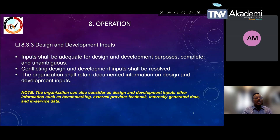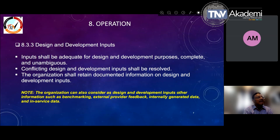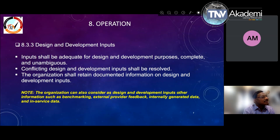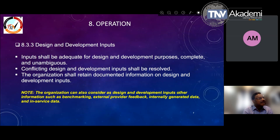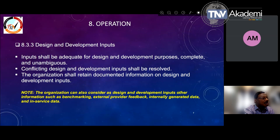Let us start with 8.3.3, which is a continuation on design and development input. Prior to design and development planning, the organization must ensure that inputs are adequate — complete in all respects, unambiguous, non-conflicting — and all inputs shall be documented and results shall be reviewed. The organization can also consider as input other information such as benchmarking, external provider feedback, internally generated data, and in-service data received from the customer during operation.